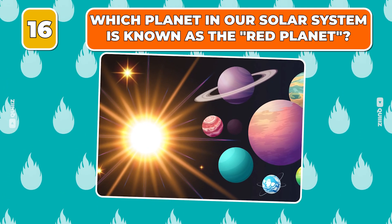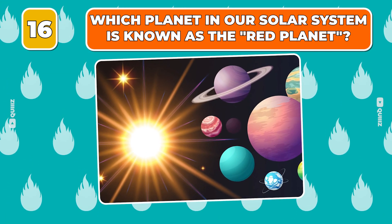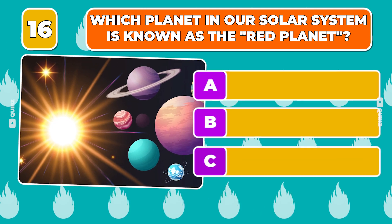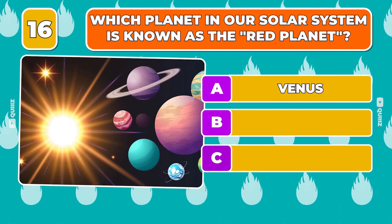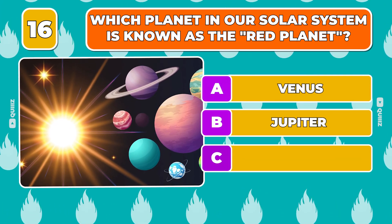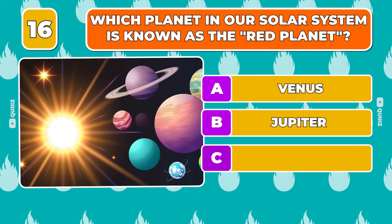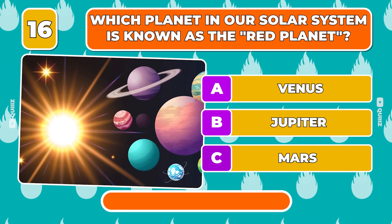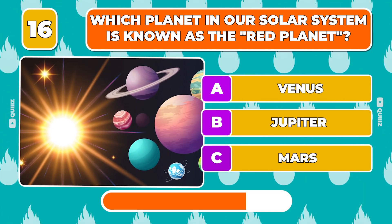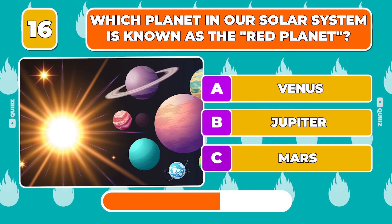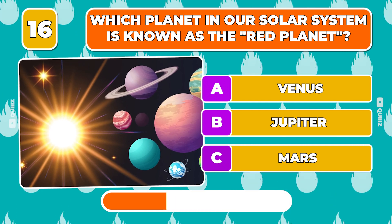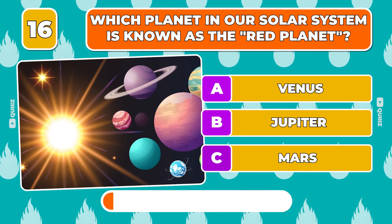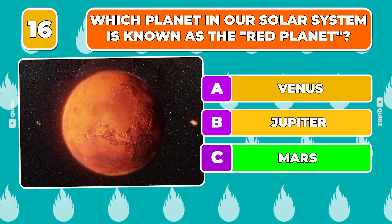Question 16. Which planet in our solar system is known as the Red Planet? Venus, Jupiter, Mars. The answer is Mars.